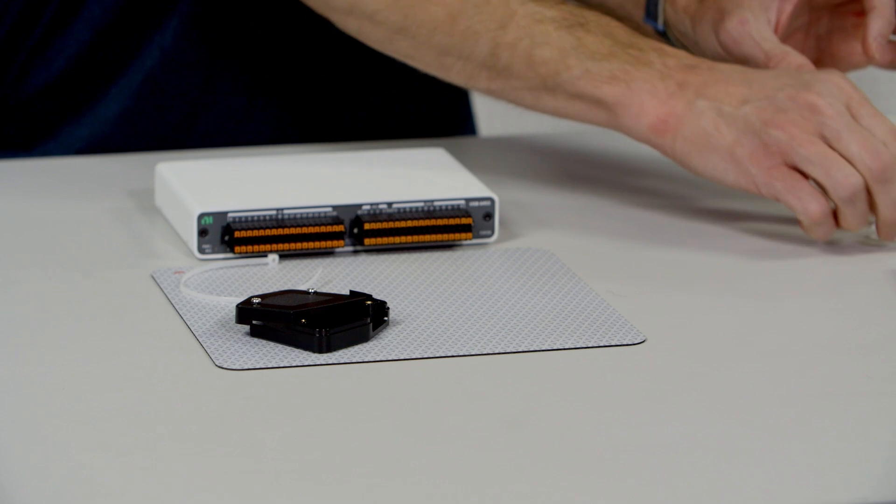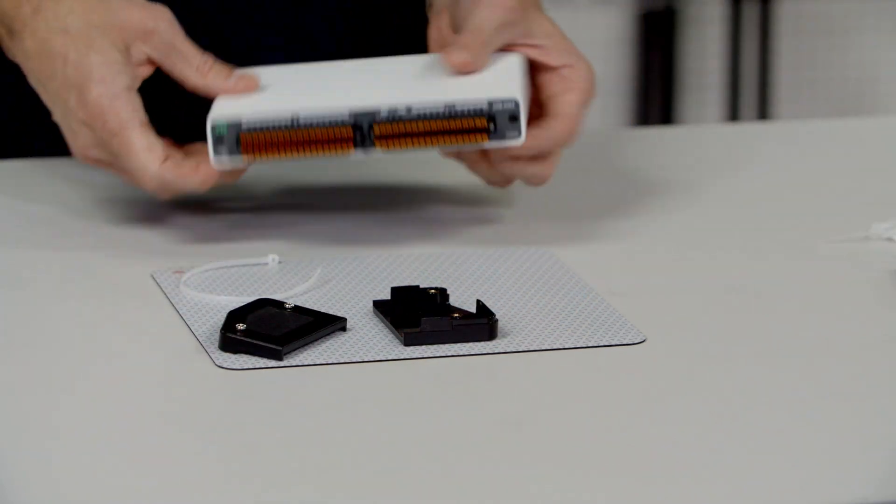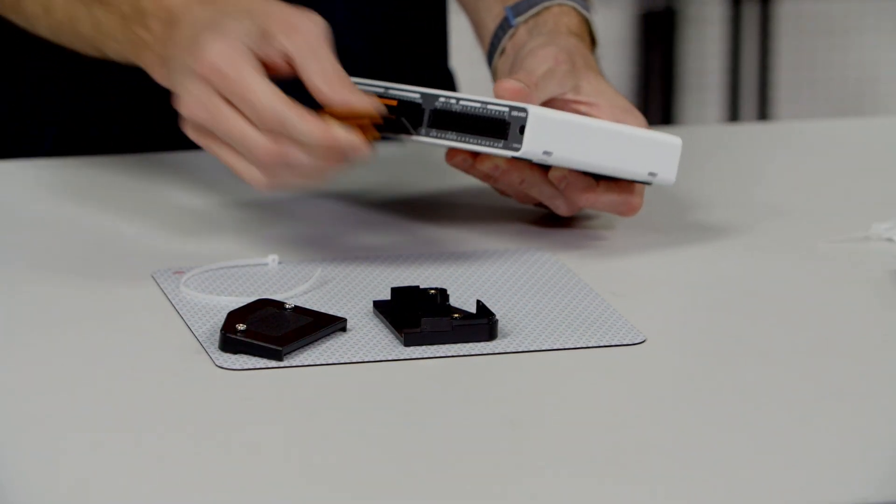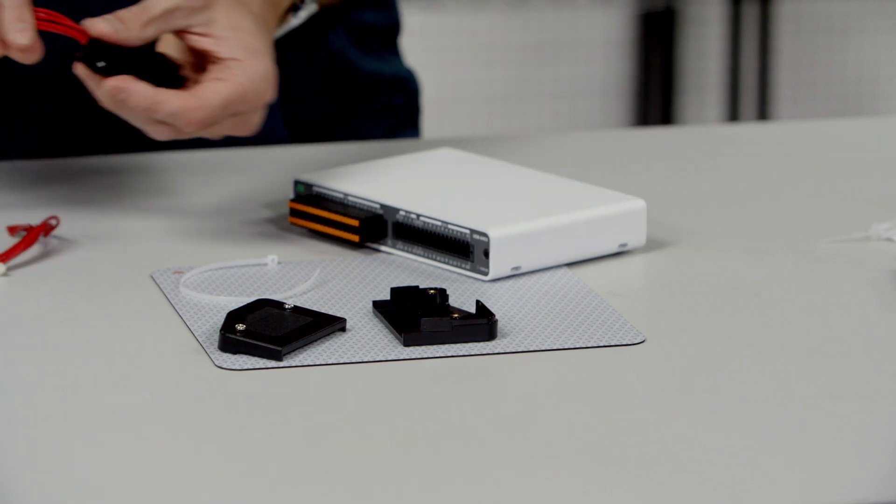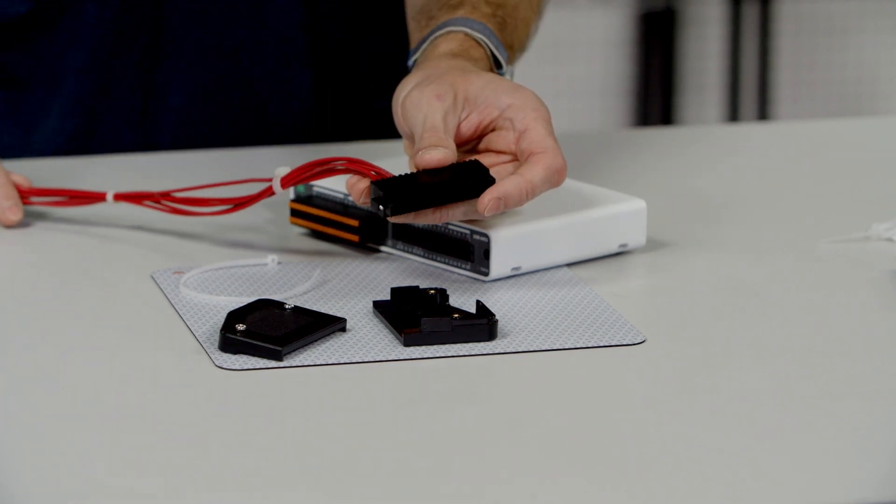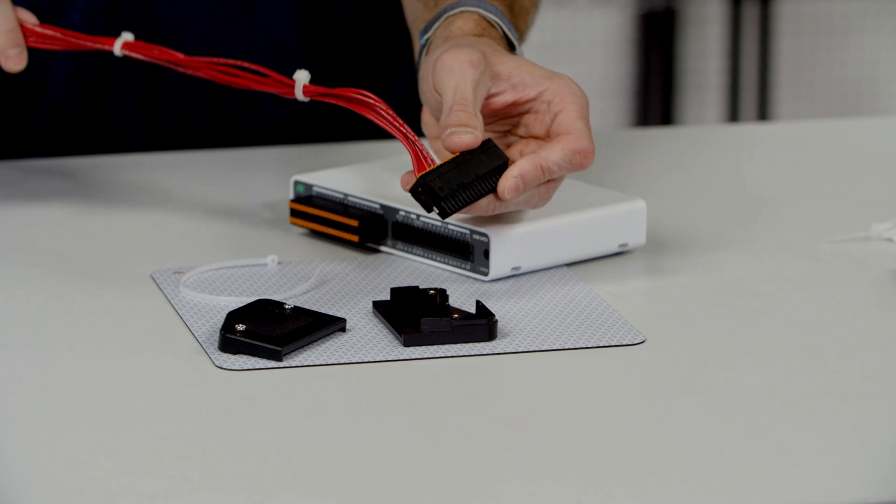So I'm going to move this one out of the way and show you how to connect a back shell to a spring terminal. I've already wired up a cable harness with just some sensor wires in it.